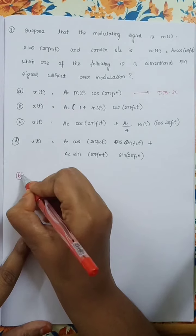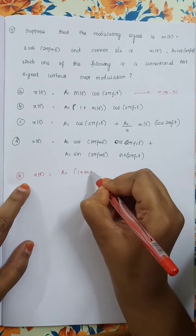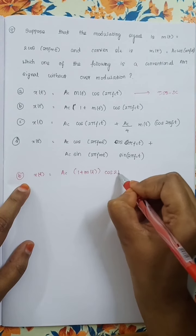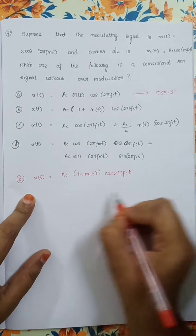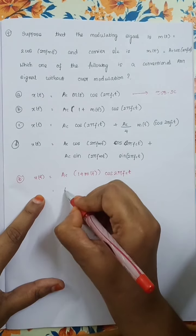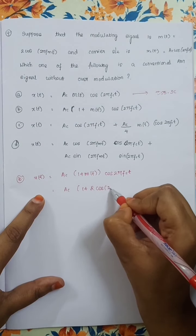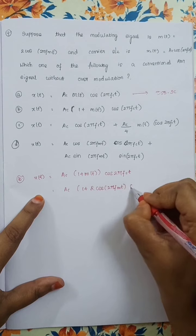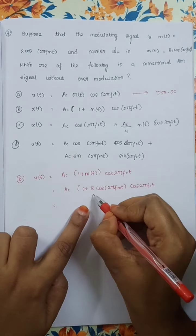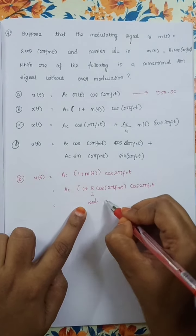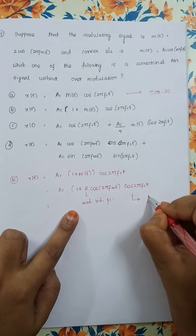Let's check which one is correct. Option B: x(t) = Ac·[1 + m(t)]·cos(2π·fc·t). Substituting m(t), we get Ac·[1 + 2·cos(2π·fm·t)]·cos(2π·fc·t). Comparing with the general form, the modulation index mu is equal to 2.